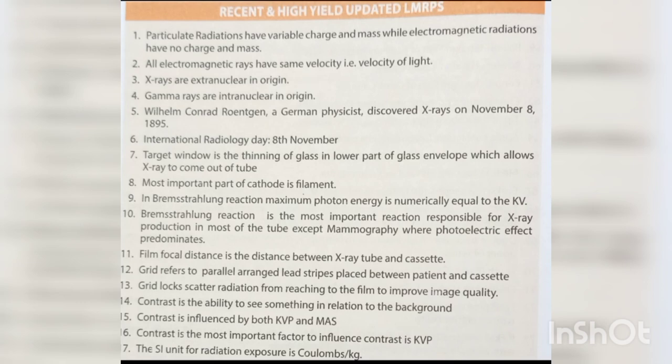Particulate radiations have variable charge and mass, while electromagnetic radiations have no charge and mass. All electromagnetic rays have the same velocity — the velocity of light. X-rays are extra-nuclear in origin; gamma rays are intranuclear in origin. Wilhelm Konrad Roentgen, a German physicist, discovered X-rays on November 8th, 1895 — International Radiology Day.